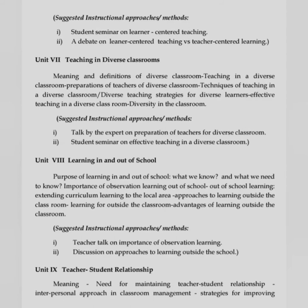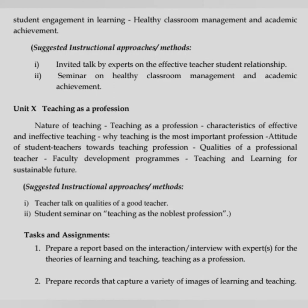Unit 9 is Teacher-Student Relationship: meaning and need for maintaining teacher-student relationship; interpersonal approach in classroom management; strategies for improving students' engagement in learning; healthy classroom management and academic achievement. Unit 10 is Teaching as a Profession: nature of teaching; teaching as a profession; characteristics of effective and ineffective teaching; why teaching is the most important profession; attitude of student-teacher towards teaching profession; qualities of a professional teacher; faculty development programs; teaching and learning for a sustainable future.